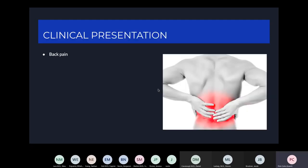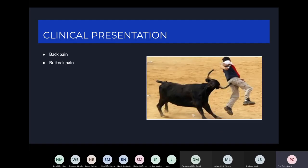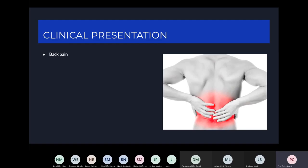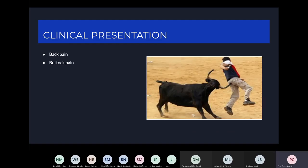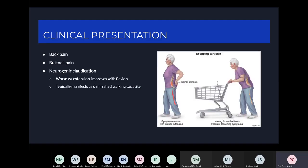In terms of clinical presentations, you can have back pain, buttock pain, and most commonly, neurogenic claudication — a sensation of pain in your back, buttocks, or legs that is worse with extension and tends to improve with flexion. As you extend, you increase pressure within the epidural space, and flexion releases that pressure and tends to relieve your symptoms.